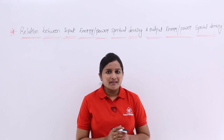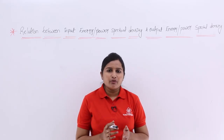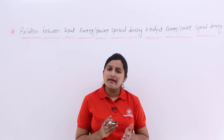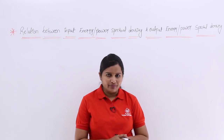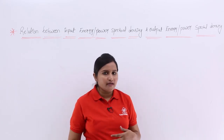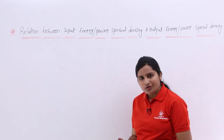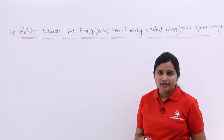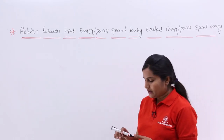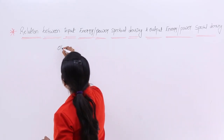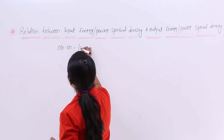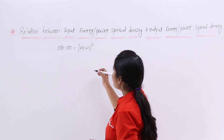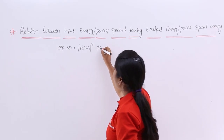In this video we are going to get the relation between input power spectral density and output power spectral density, or input energy spectral density and output energy spectral density. The relation between spectral densities will be like this: output spectral density is equivalent to the modulus of H of omega — where H of omega is the transfer function of the system — squared, into input spectral density.